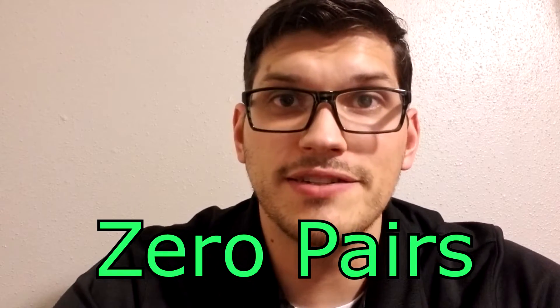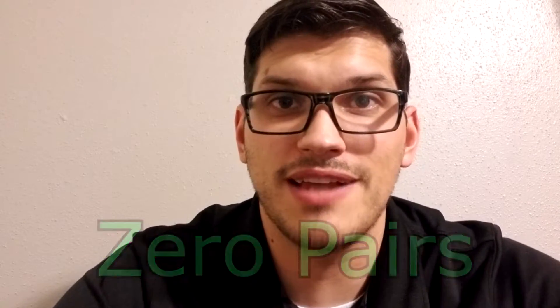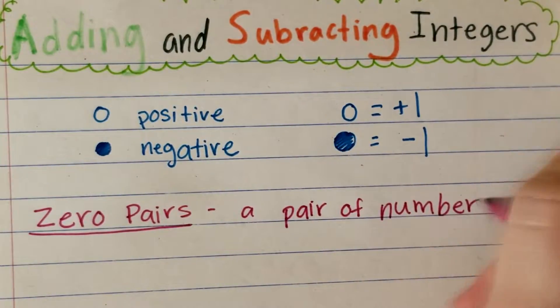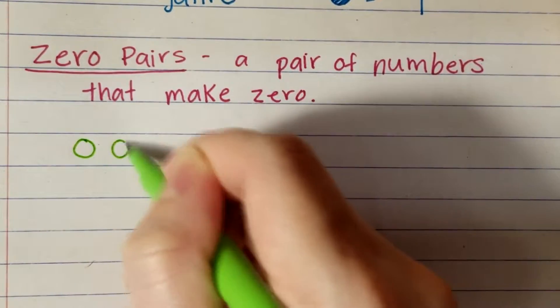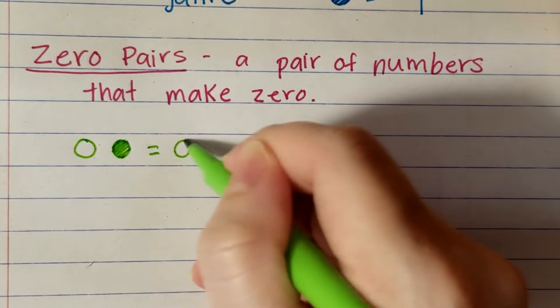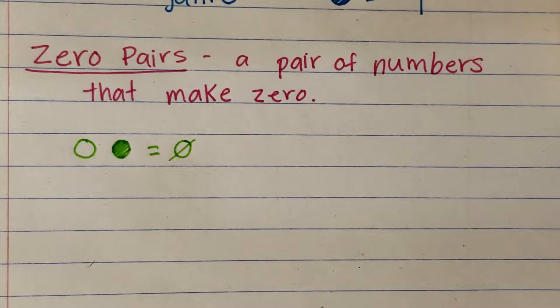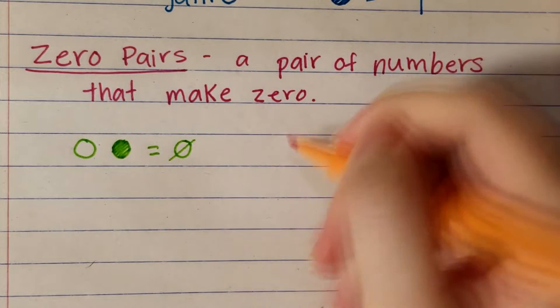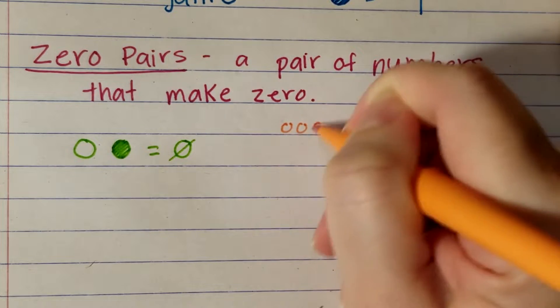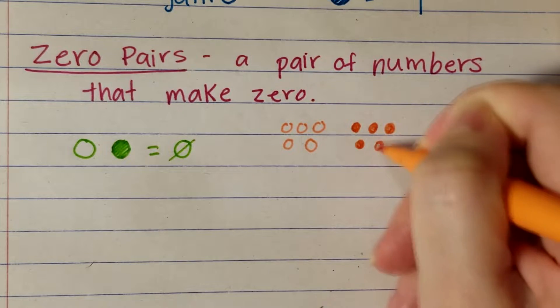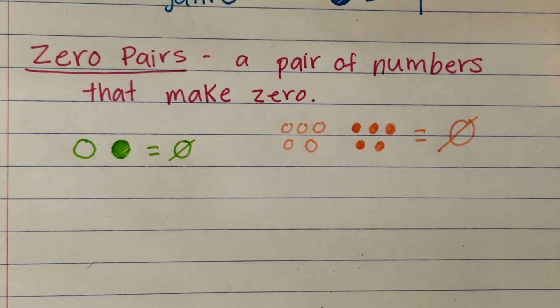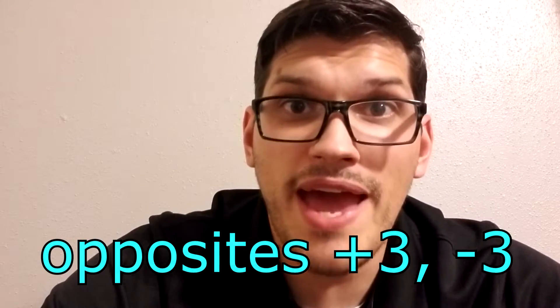We are also going to need to know about zero pairs and it is exactly what it sounds like. A pair of numbers that make zero. For example, if I have positive one and negative one together, it equals zero or positive five and negative five. Still zero. Each positive cancels out a negative and vice versa. We use opposites to create zero pairs.